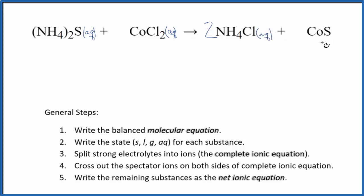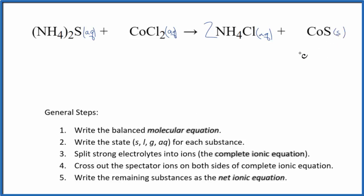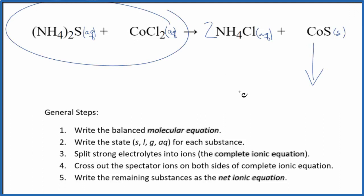And then we have this cobalt sulfide. Sulfides in general are insoluble — ammonium compounds are so soluble that ammonium sulfide is soluble, but in general sulfides are insoluble. In this case, cobalt 2 sulfide is insoluble. We're going to call it a solid — it's going to be a precipitate, falling to the bottom of the test tube after these two substances react.